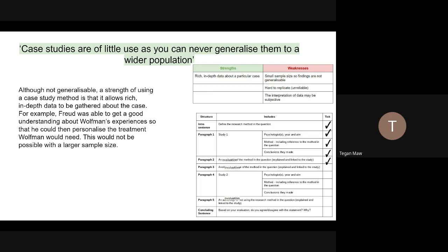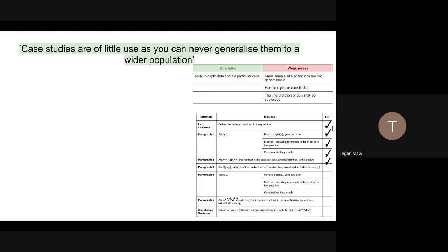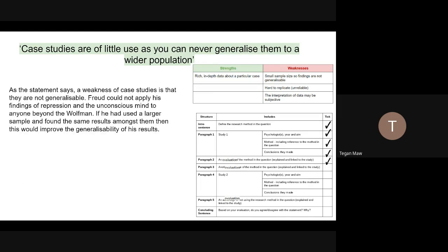Our third paragraph is going to be another evaluation. As the statement says, a weakness of case studies is that they are not generalisable. Freud could not apply his findings of repression and the unconscious mind to anyone beyond the Wolfman. If he'd used a larger sample and found the same results amongst them, then this would improve the generalisability of his results. So we are kind of saying that we are agreeing with that statement in this paragraph here. So you've got four to six of your AO3 marks there.